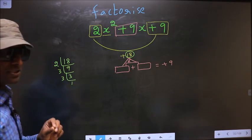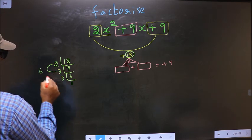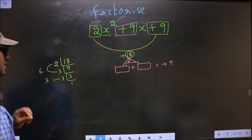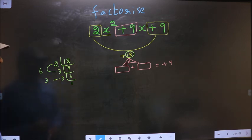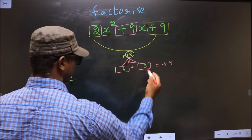The 2 numbers should be 2 into 3, 6, and the second number is 3. 6 plus 3 is 9, 6 into 3 is 18. So here you write 6 and here you write 3.